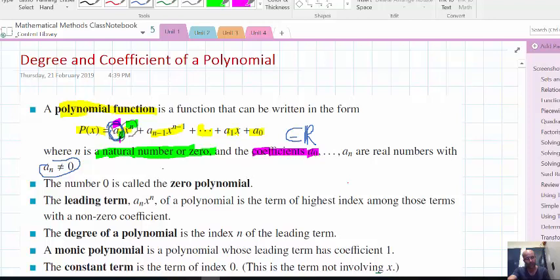It ceases to exist in terms of being a term. So, the number zero is called the zero polynomial because zero is zero times X to the zero. And X to the zero is one.